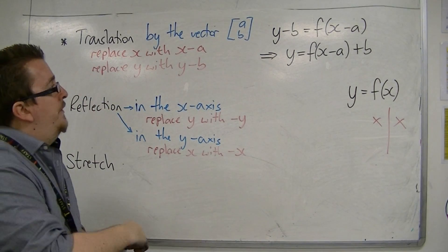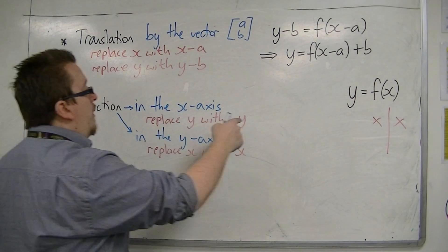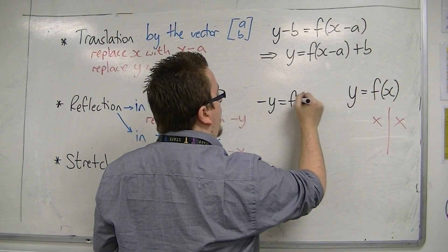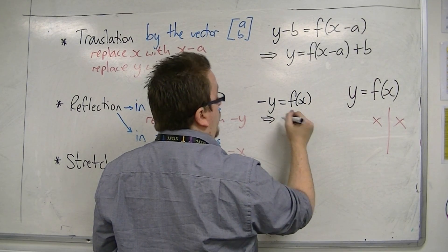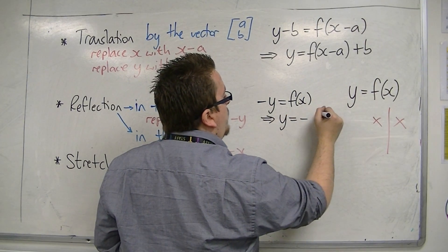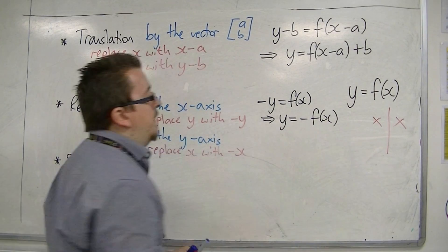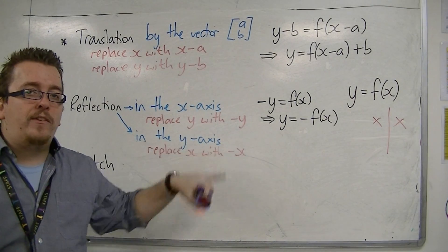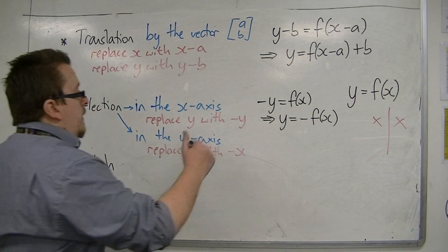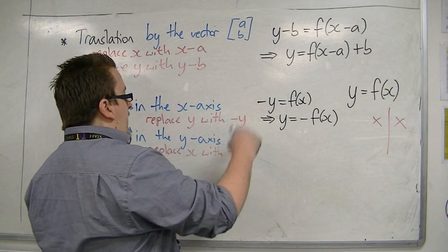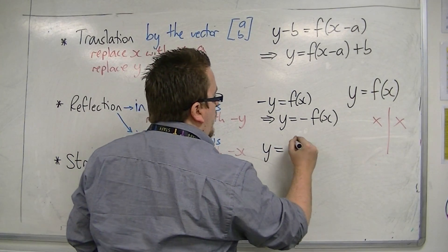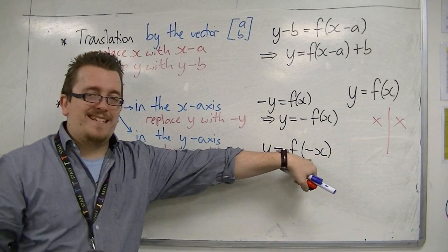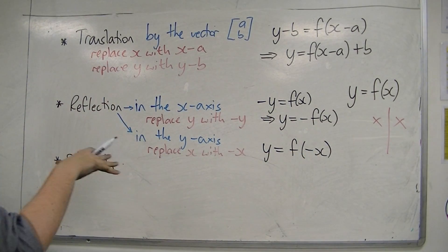So in other words, in function notation, if I replace y with minus y, then I now have minus y is f of x. And if I write that as y equals, that's y equals minus f of x. So the minus on the outside represents a reflection in the x-axis. If you replace the x with minus x, then we have y is equal to f of minus x. So if the minus is inside the bracket, then it's a reflection in the y-axis.